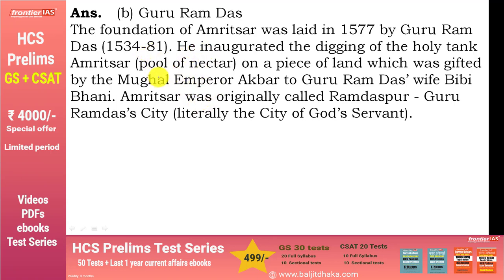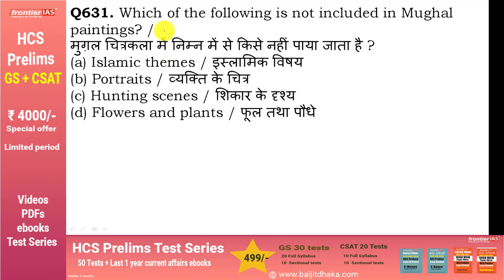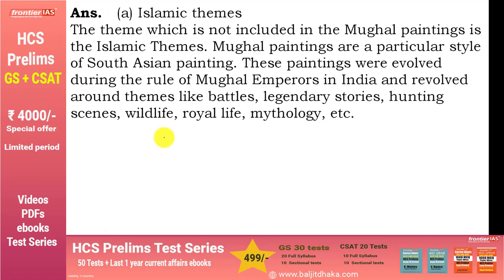Which of the following is not included in Mughal paintings? Mughal चित्र कला में Islamic themes नहीं पाई जाती हैं। Mughal paintings में जो themes मिलती हैं वो हैं: battles, legends, hunting, wildlife, royal life, और mythology। Mughal painting South Asian painting की एक particular style है, लेकिन इसमें Islamic themes नहीं मिलती।